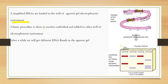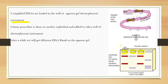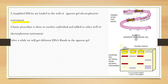The same procedure is done for another individual, and the two individuals are compared. After separation, we get different DNA band patterns in the agarose gel. If the first organism and the second organism show similar band patterns, they are related to each other; if the band patterns differ, they are not related.